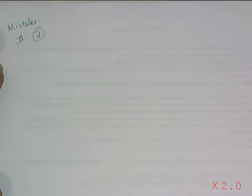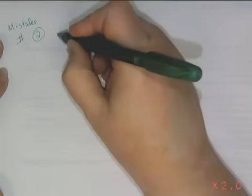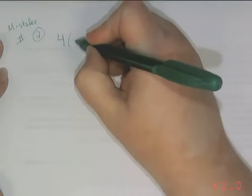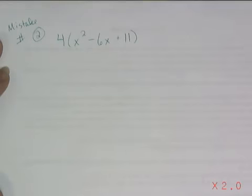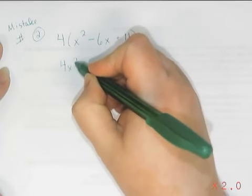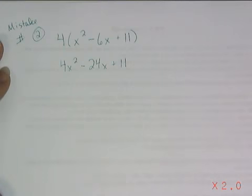Now let's look at an example of mistake number 2, where people don't always remember to distribute to every term in the parentheses. This tends to happen a lot more often when the polynomial in the parentheses is a longer one. Maybe they have a problem like this: 4 times the quantity of x squared minus 6x plus 11. People start to take shortcuts and they'll write something like 4x squared minus 24x plus 11.